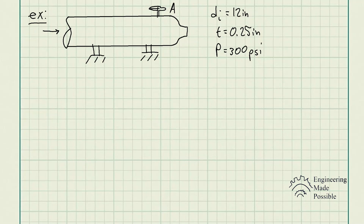For this problem statement, we have a steel water pipe with an inner diameter of 12 inches and a wall thickness of 0.25 inches. If valve A is closed and the water pressure is 300 pounds per square inch, determine the longitudinal and hoop stress developed in the wall of the pipe.